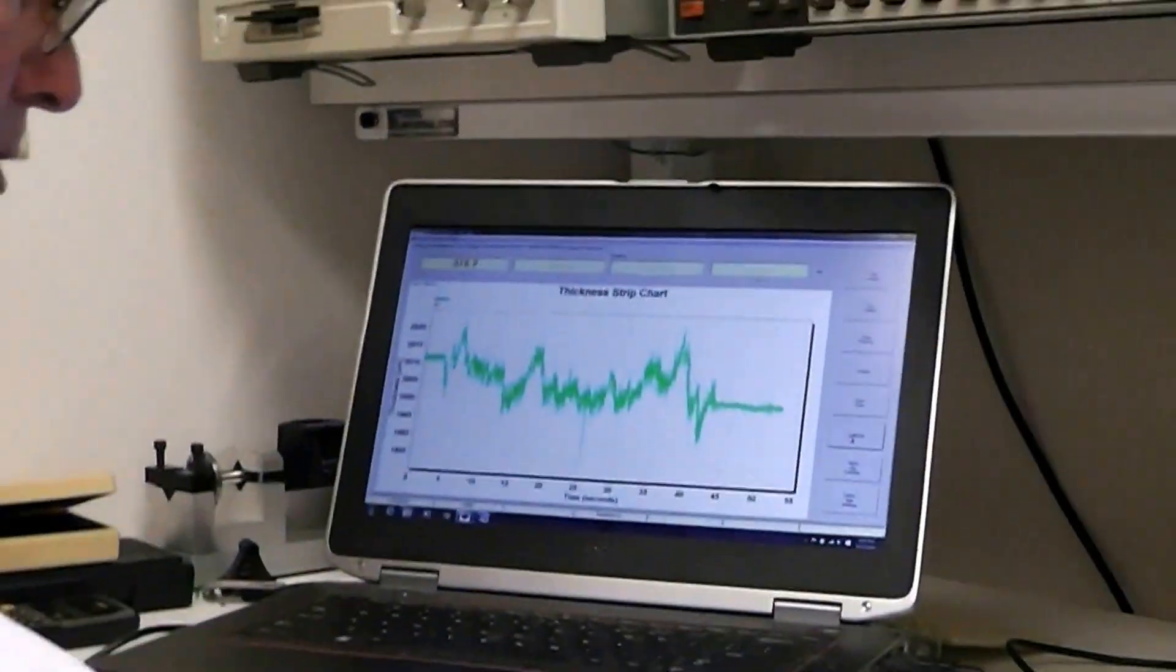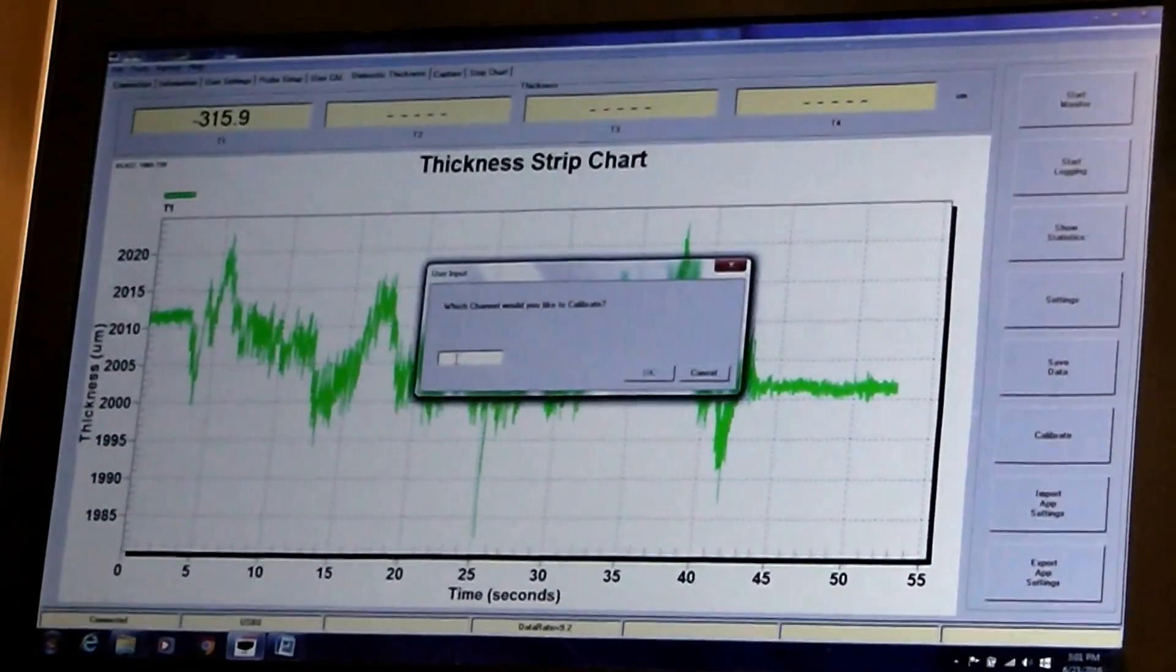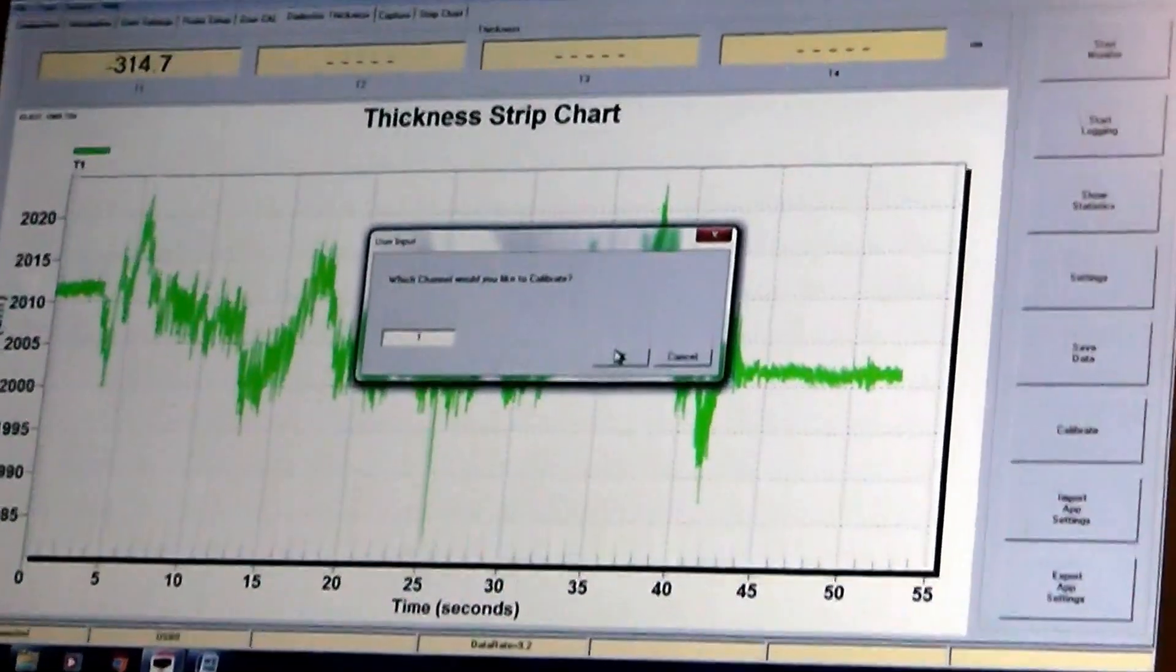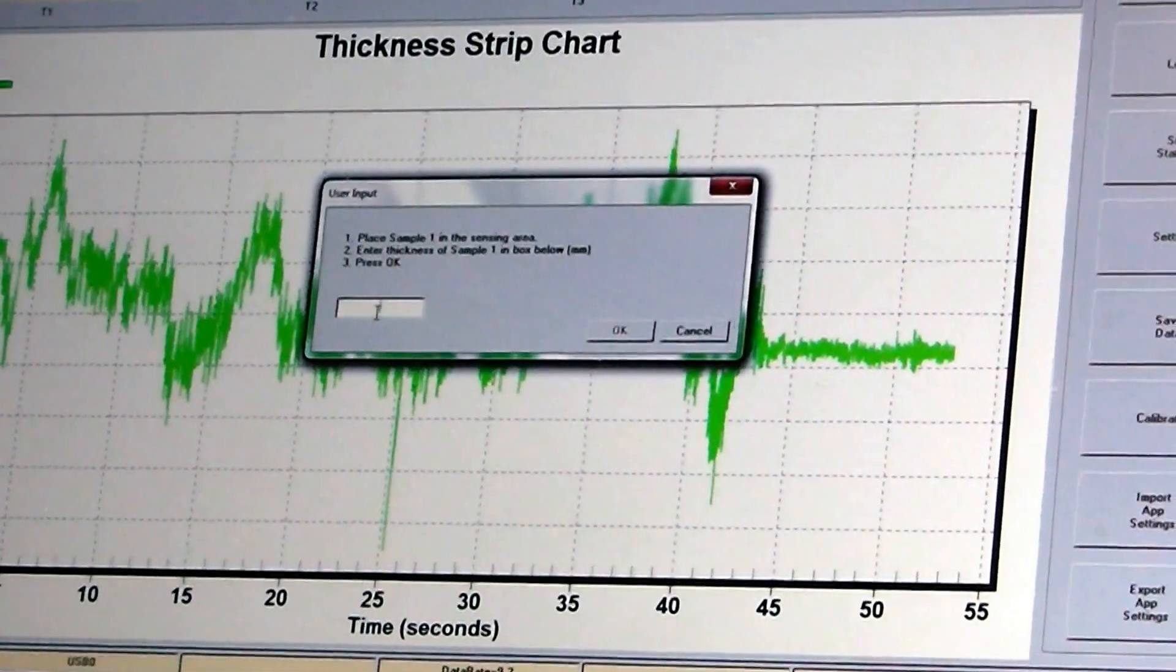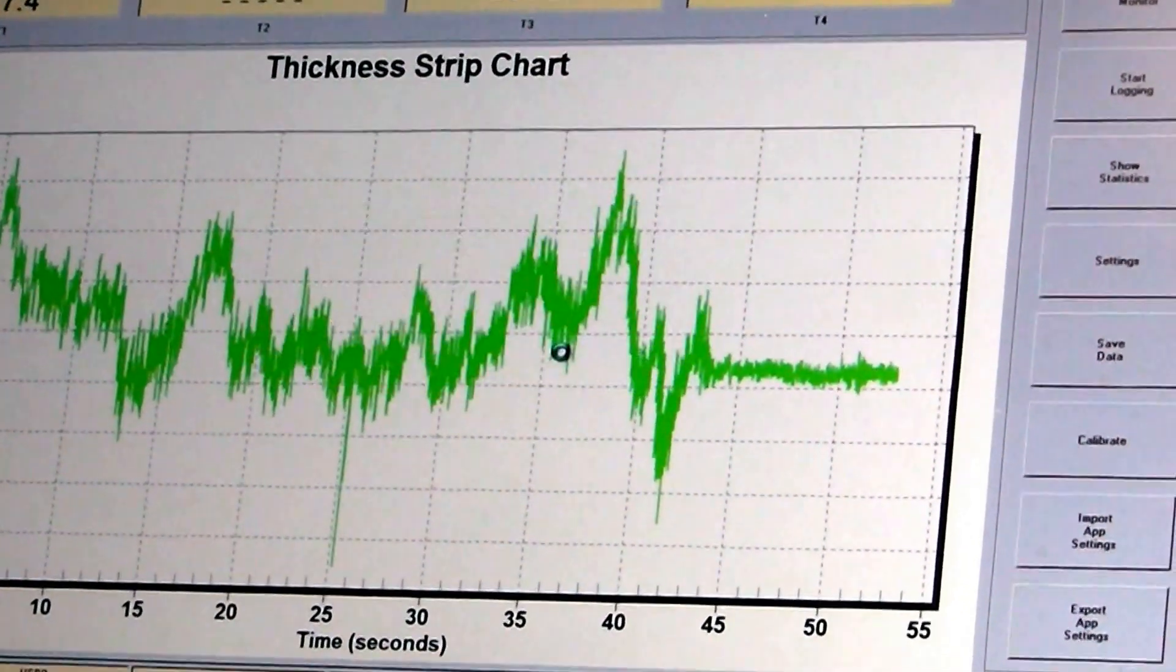We're going to start the calibration procedure by clicking the calibrate button, and I'm calibrating channel 1. We only have one channel being used right now, so I enter 1 in there. The next thing I'm going to put in is 0 because we have 0 thickness in the gap right now. I click OK.